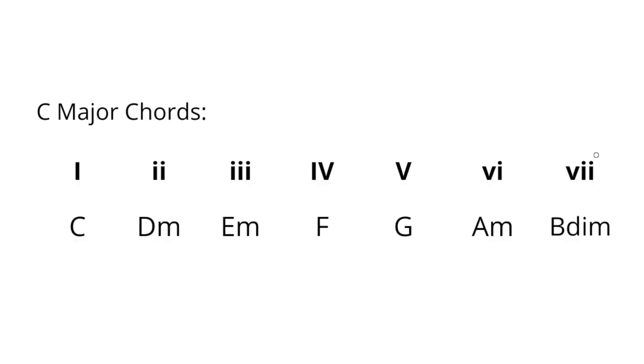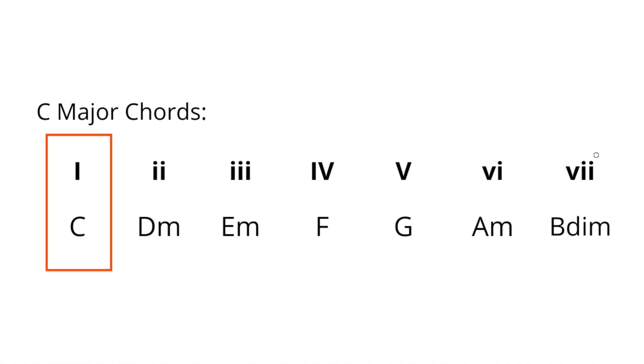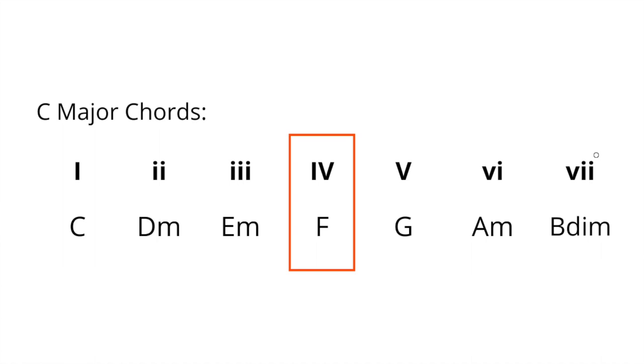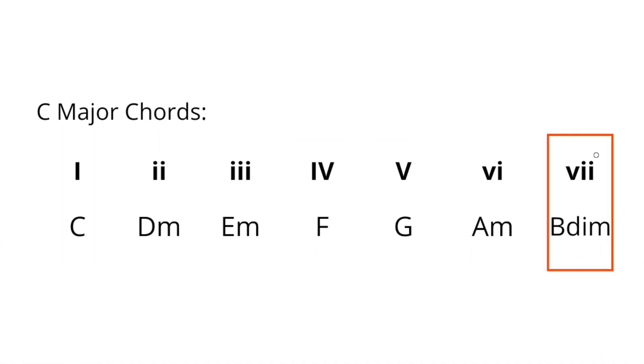We're going to be working in the key of C major today. The diatonic chords in the key of C are: C, D minor, E minor, F, G, A minor, B half diminished, and C again.